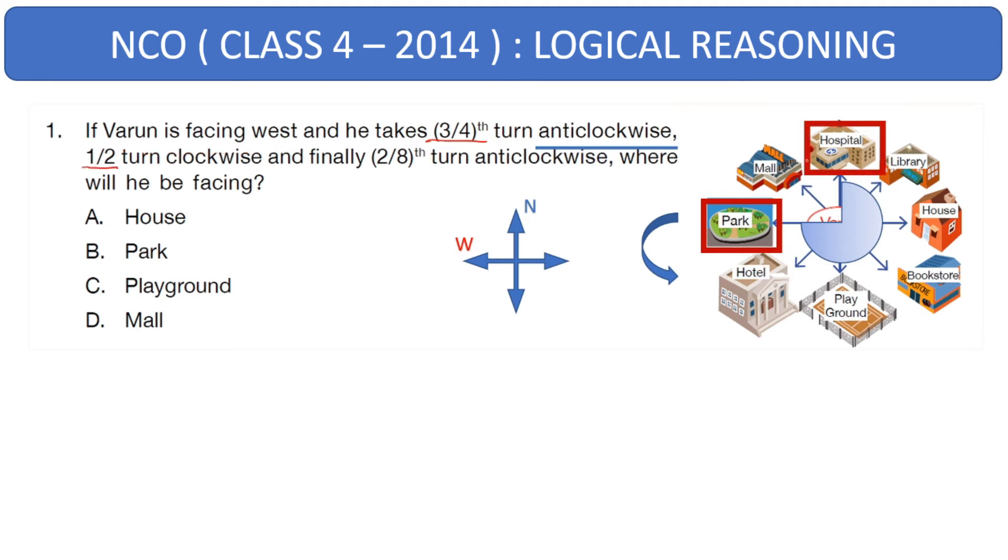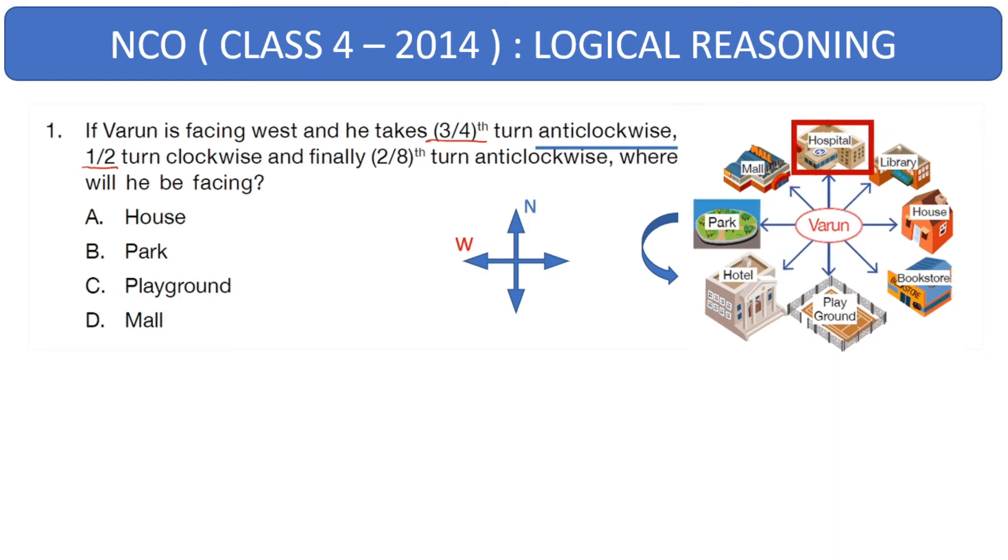Now let's go to the next part which says half turn clockwise. From hospital, we have to take half turn clockwise. Clockwise is this direction shown by the red arrow. And half turn, that means half circle from hospital would land us to playground.